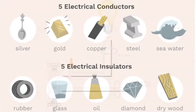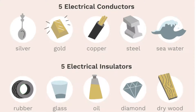Electric current flows more easily in some types of atoms than in others. Atoms that let current flow easily are called conductors, whereas atoms that don't let current flow easily are called insulators.